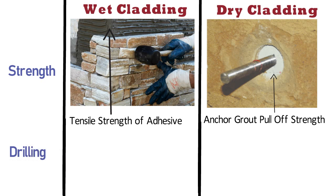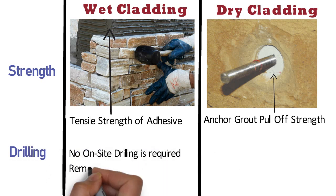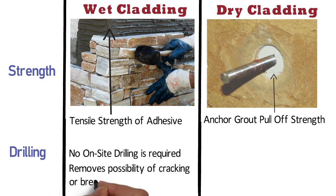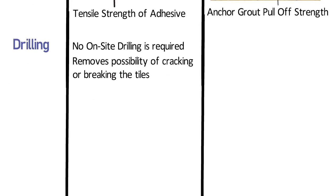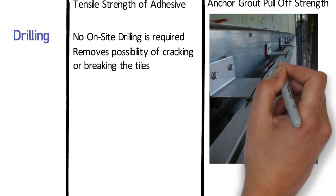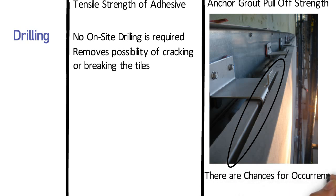Drilling: In case of wet cladding, no on-site drilling is required. This removes the possibility of cracking or breaking the tiles. Whereas in case of dry cladding, drilling is part of fixing the tiles. Hence, there are chances for the occurrence of cracks on the substrate.